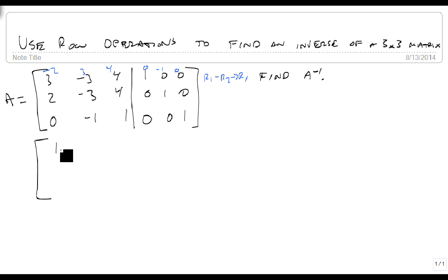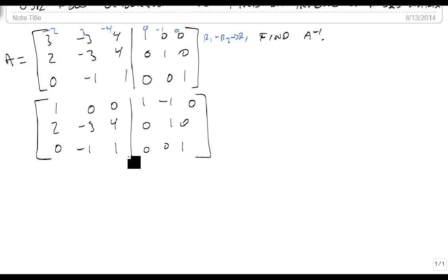That gives me the matrix 1 0, that should be a minus 4 because we're subtracting, 0, 1 minus 1, 0. And then the rest stay the same. I did that rather than dividing by 3 because I'd like to avoid fractions in my matrices as long as possible.